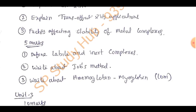Next 5-mark questions: Define labile and inert complexes, write about Job's method, write about hemoglobin and myoglobin. If you have a model paper, you can choose the model paper.